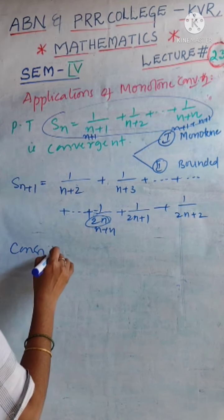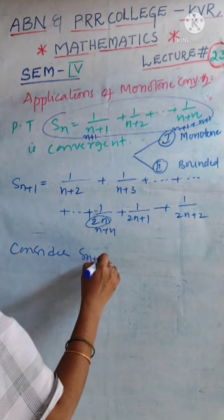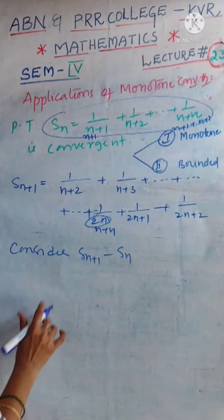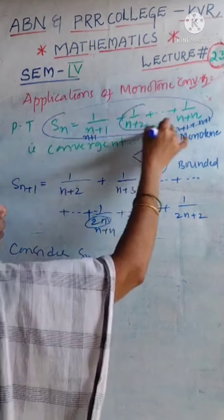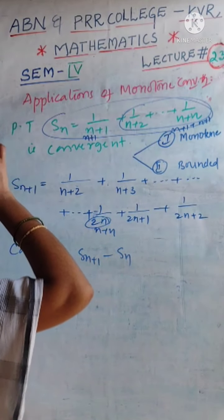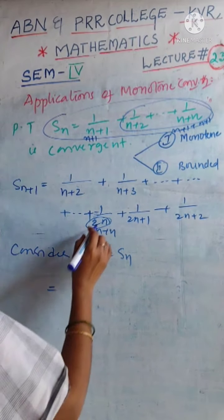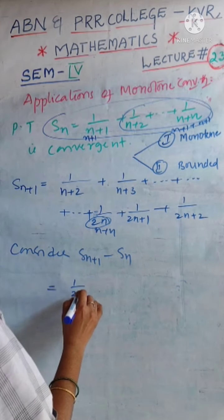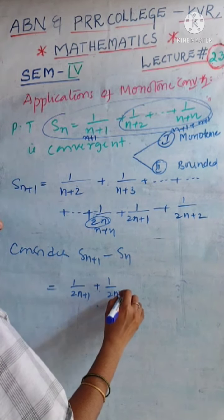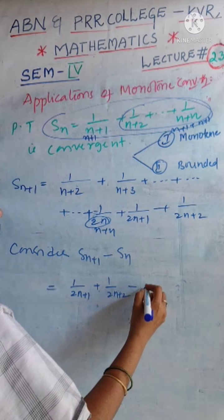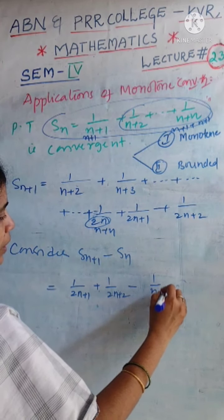Now, consider the subtraction Sn plus 1 minus Sn. This value is equal to, on observation, by taking the subtraction, all these terms are cancelled. Finally, we have 1 by 2n plus 1 plus 1 by 2n plus 2 minus 1 by n plus 1.